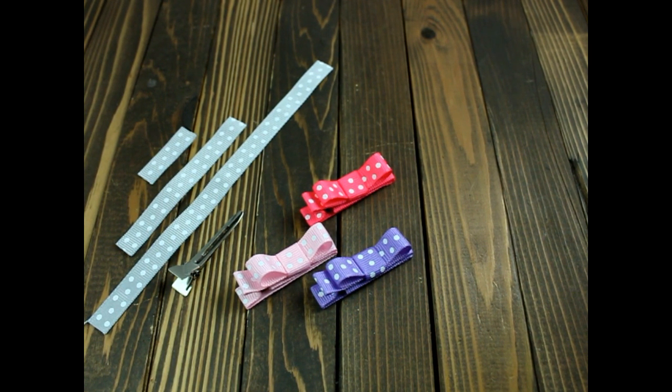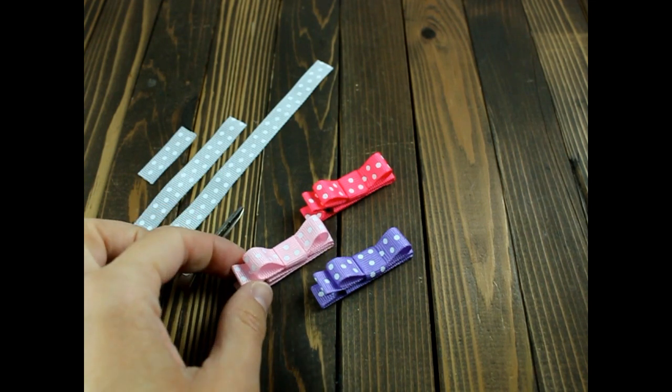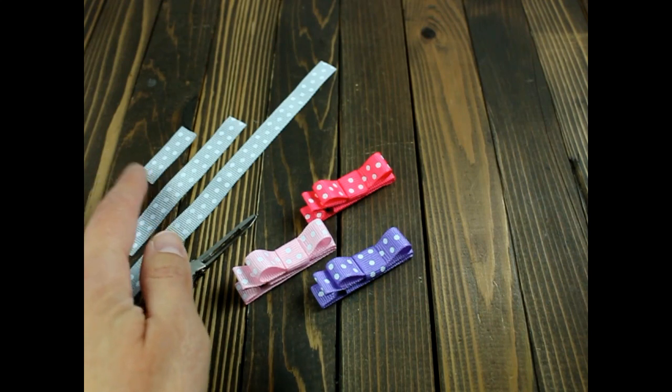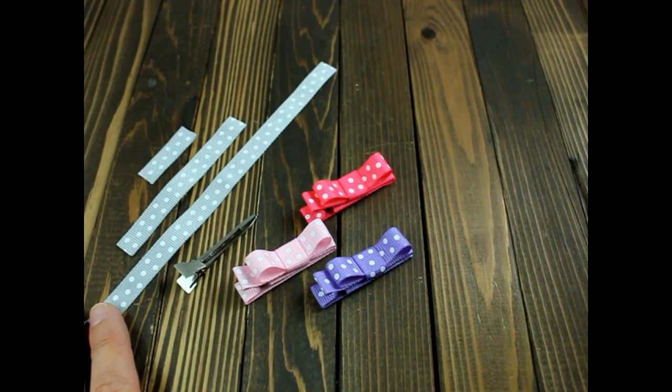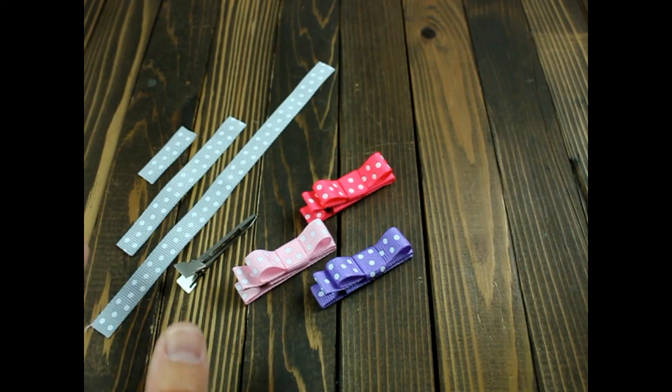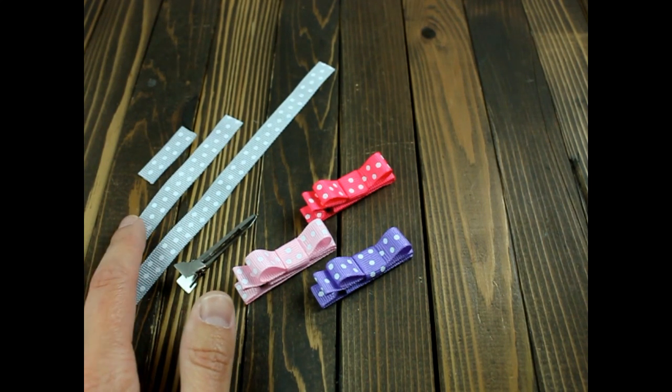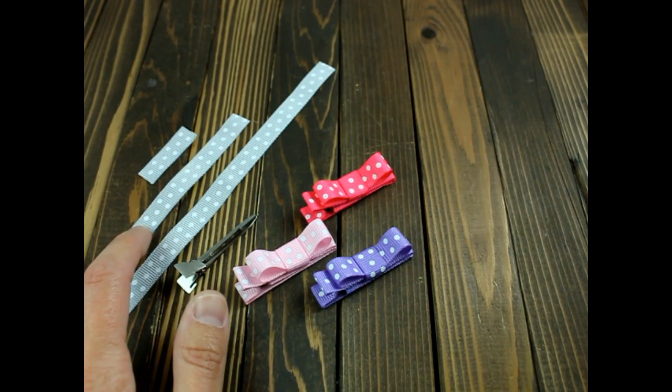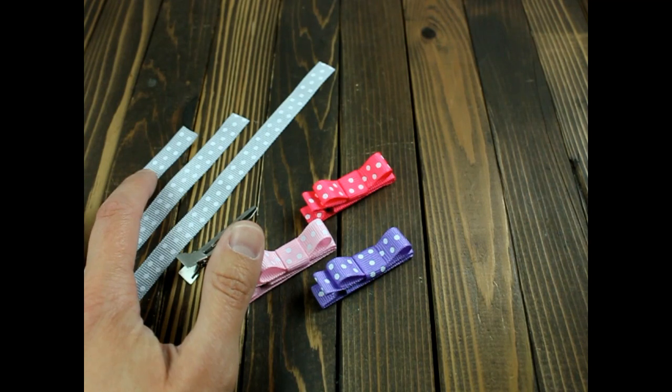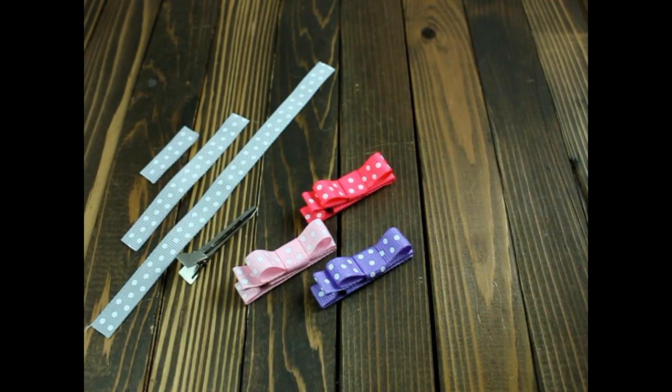Hi, this is Gwen from Hair Bow Supplies, and today I'm going to show you how to make baby hair clippies. You will need an alligator clip and three different pieces of 3/8 inch ribbon: six and three-quarters inch long to line the alligator clip, three and a quarter inches long for the bow, and one and a quarter inches long for the center. You will also need scissors, a lighter, and a hot glue gun.